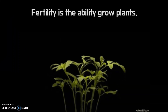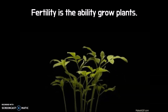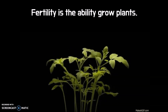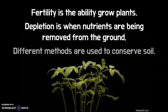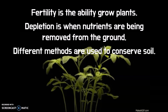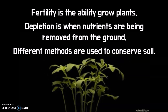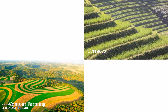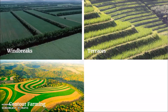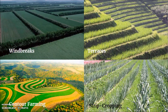All this movement affects the fertility, which is the ability of plants to grow in the soil. Depletion is when the nutrients are being removed from the ground, so different methods are used to conserve the soil — meaning to save it so that it's still fertile. The first two methods, terrace and contour farming, prevent mass movement where the soil slides down the side of a hill, as well as wind breakers and strip cropping, which prevent movement because of wind, which we will discuss when we talk about wind erosion.